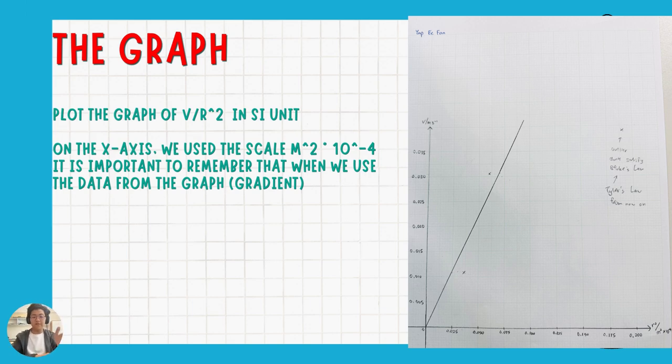And now, I've plotted a graph V to R squared. Note that if we look at the x-axis, because we're using SI units so that when we calculate, we don't have to convert everything again. So I'm just going to plot the graph in SI unit, which means the radius squared is in meters squared. But the value is too small, so I wrote 10 times 10 to the power of negative 4 at the end of the axis. So all the values down there are multiplied by 10 to the power of negative 4. It is important to remember that we use 10 to the power of negative 4 when we are getting the gradient later. And I'll show you what happens if you don't remember that.